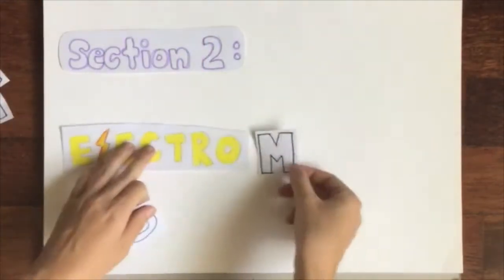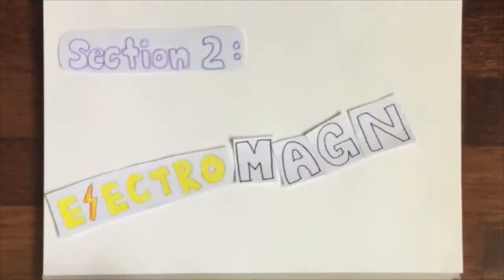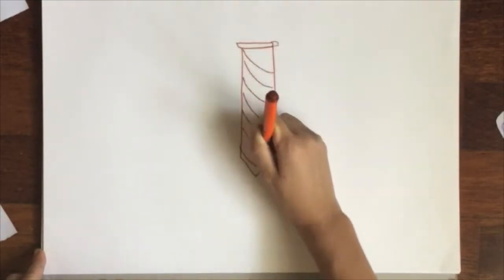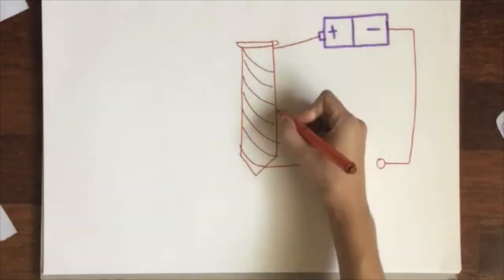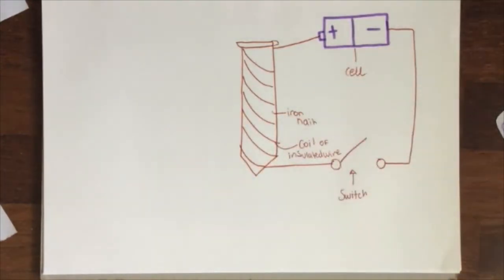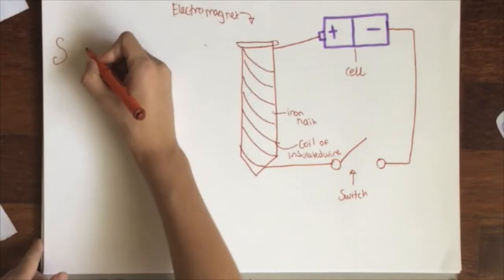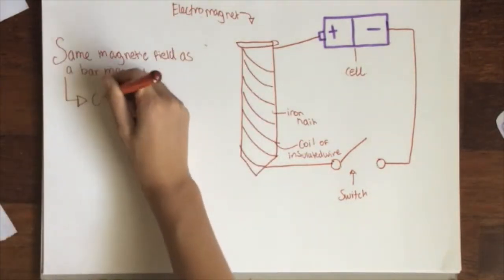Section 2: Electromagnetism. Electromagnets are made by putting a coil of wire around an iron core and passing a current through the wire. Here is an electromagnet in a circuit with a battery. It has the same magnetic field as a bar magnet and it can be turned off and on.